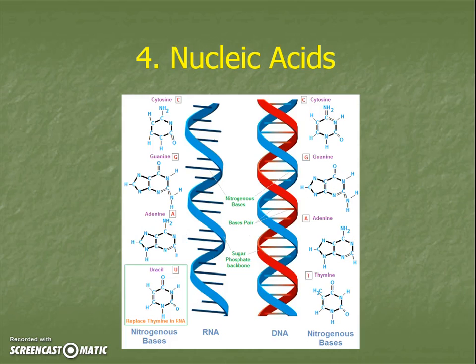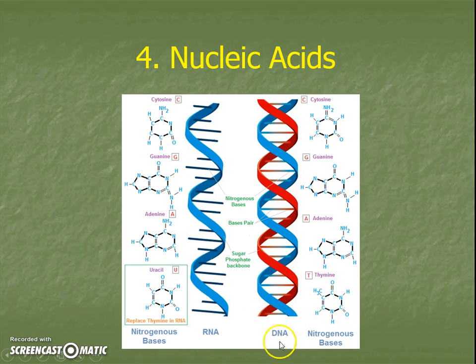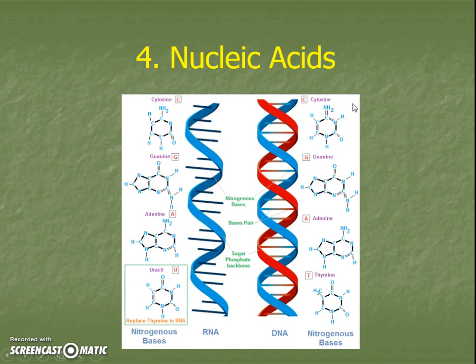The next and last category is nucleic acids. What a weird one — all the other three sounded familiar and this one doesn't. If I look carefully, one of these structures might look familiar — it's a double helix. And if I look carefully at this diagram, an example of a nucleic acid I might write in the notes would be DNA. We'll learn way more about this one throughout the year. As long as you know this is a category, and if you want to be super awesome, write down the example DNA.